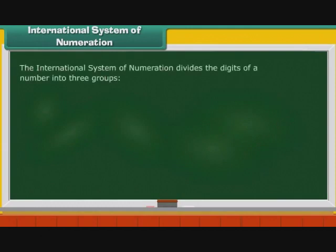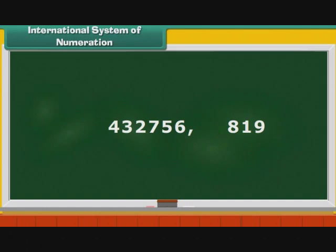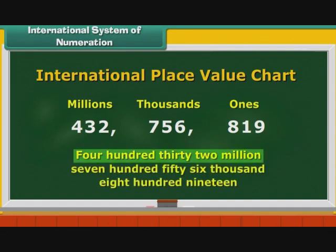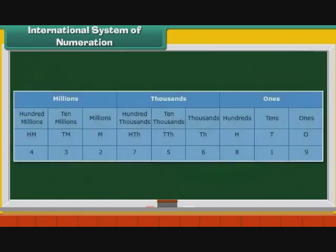The international system of numeration divides the digits of a number into three groups: ones, thousands, and millions. Let us see how. Consider the number 432756819. We count three digits from the right and place a comma before 8. Then we count three more digits and place a comma before 7. Thus, we have three groups: ones, thousands, and millions. This is the international place value chart. Now let us read the number from left: it is 432,756,819.